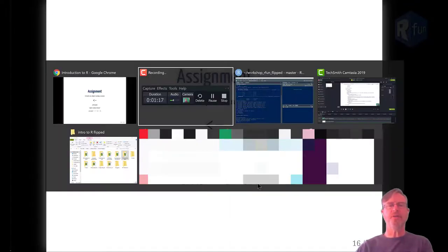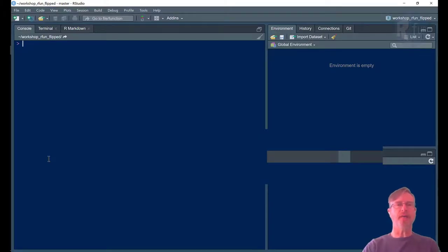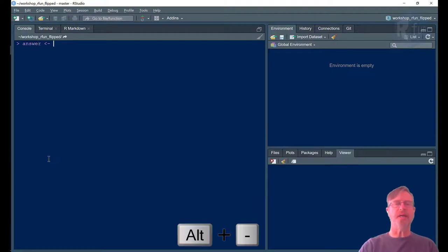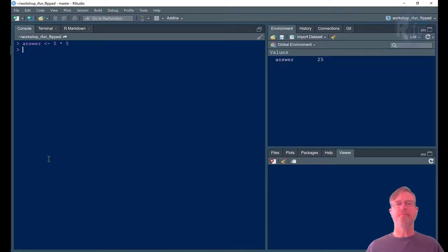Let's have a quick look in R Studio. So just in the console, I can type answer, alt dash, answer gets value from 5 times 5. And then if I want to look at that, what is the value of answer? I can just type answer. And of course, it's 25.